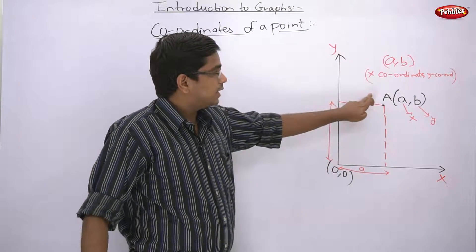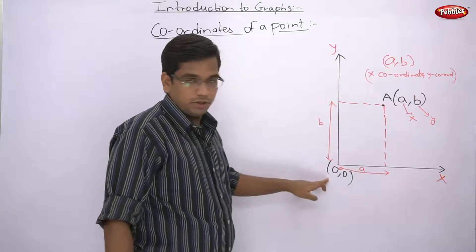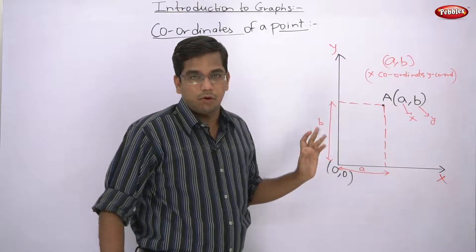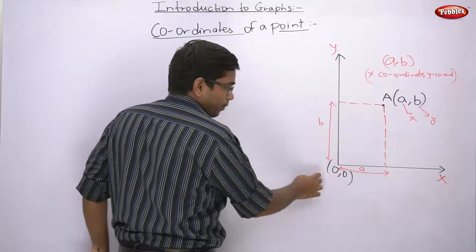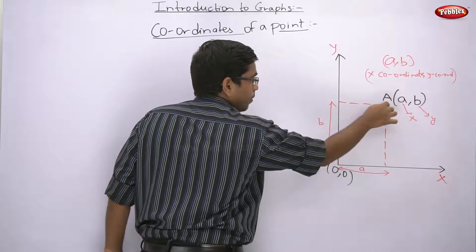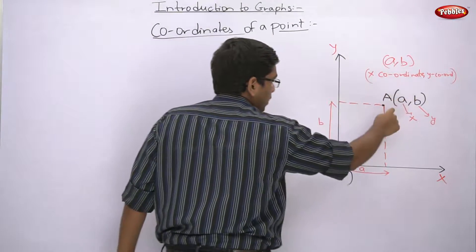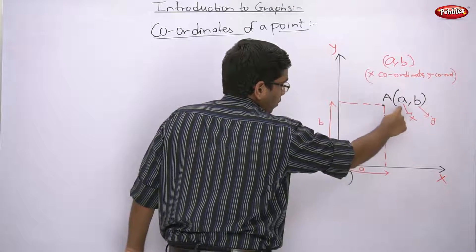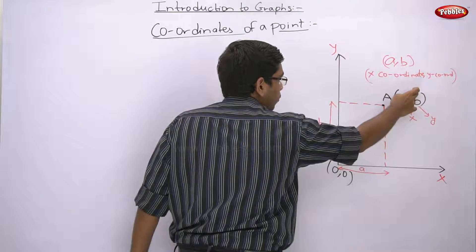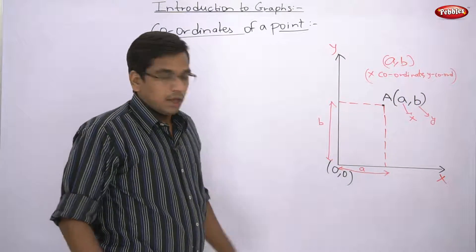Point A is at a distance from the origin. Origin is at 0,0. From the origin, go horizontally small a, and from there vertically small b — you will reach point A. That is your coordinates (a, b). The meaning is: horizontal distance from the origin is your first coordinate (small a), and vertical distance from origin is your second coordinate (small b).